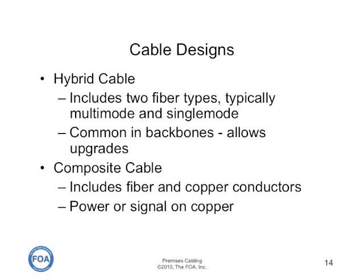While most cables simply include a quantity of fibers of the same type, there are two other cable types used in certain applications. A hybrid cable includes two fiber types — typically multi-mode and single-mode — and is popular for large enterprise backbones and campuses where some equipment may run on multi-mode fiber, some on single-mode, with single-mode fibers included for future expansion. There's also composite cable that includes fiber and copper conductors, which can be coax, twisted pair, or power conductors, and is typically used in specialized cables for unique applications.